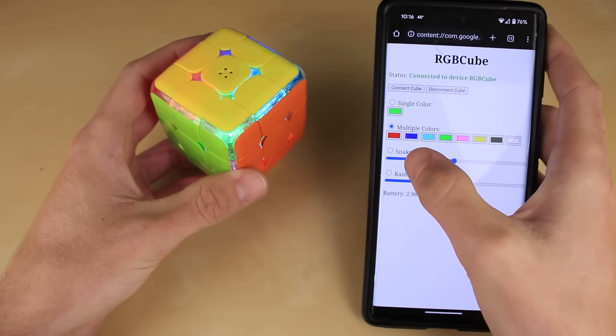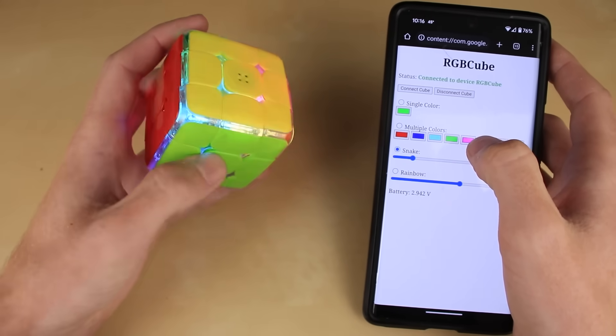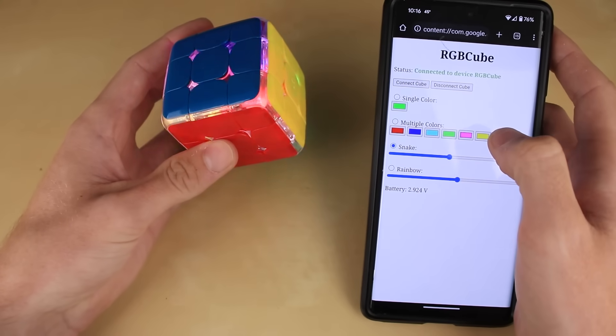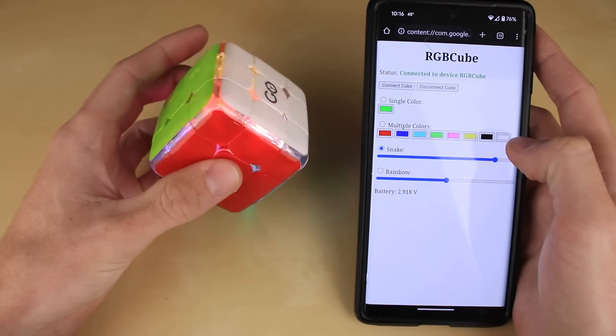But wait, it gets even cooler, because we can now enable the snake option. So now all those colors that we just set will start snaking their way around the cube in one big rainbow mess. We can make it a little bit faster. There we go. Party mode, and all the way up. Oh, that's awesome.